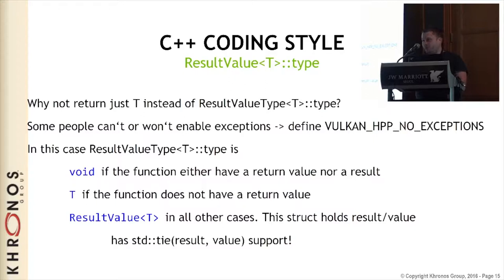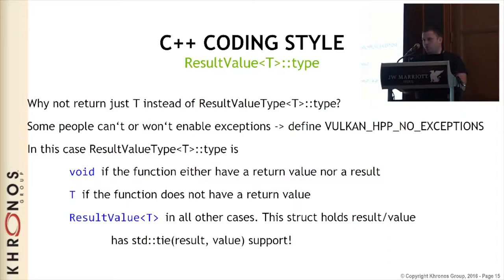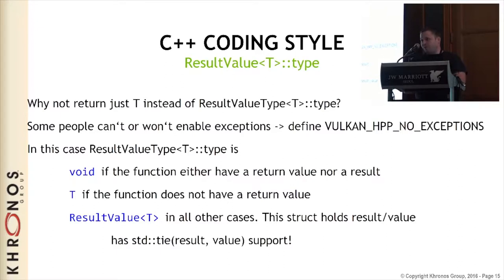Since some people can't use exceptions because their compiler doesn't support them, there is a define VULKAN_HPP_NO_EXCEPTIONS. If you set this, we return a special struct which contains the error value and the newly created object. You can use this result value and decompose it with std::tie, or on C++17 you can write auto with braces and put the two values inside. But usually you should try to use the exception version because this way you can't ignore errors.